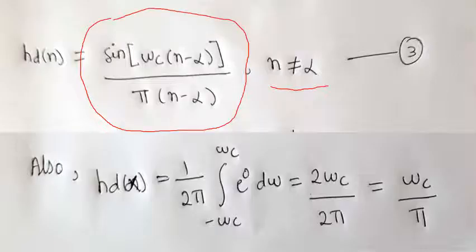HD of N or HD of alpha equals omega c divided by pi. Using these two formulas we find HD of N for both the cases.